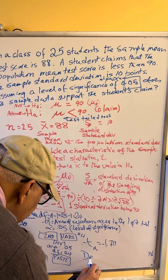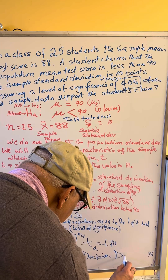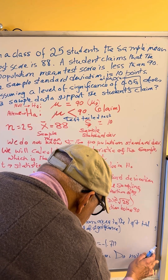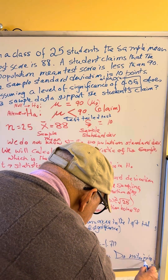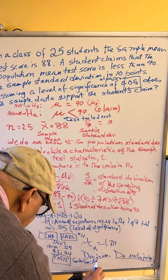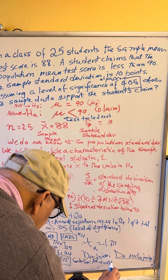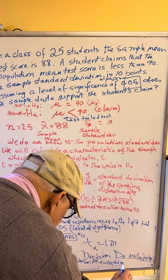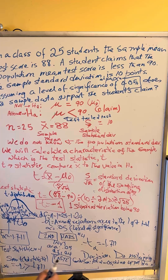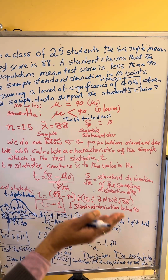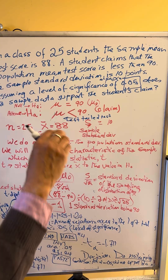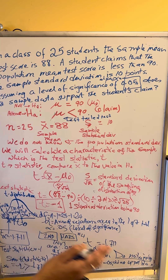Since T equals minus 1, which is greater than minus 1.711, the decision is: do not reject H0. The conclusion is: at alpha equal to 0.05, we do not support the alternate. The sample mean of 88 is located one standard deviation below — the negative sign means below, on the left — of the population mean value in the null hypothesis.